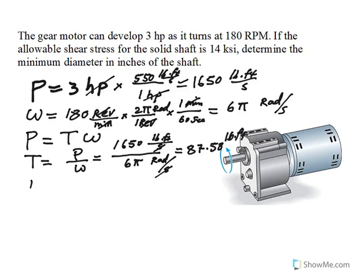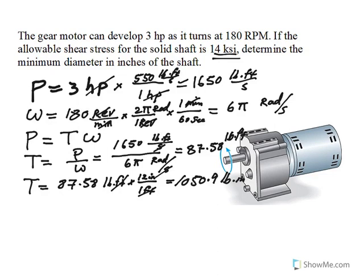So now, I want to change this to pound inch. Because you see how the value of the shear stress is in KSI. KSI is 1,000 psi. So I just have to multiply that by 12 because 1 foot is 12 inches. So the feet and feet cancel. So this becomes about 1,050.9 pound inch.